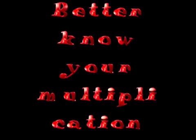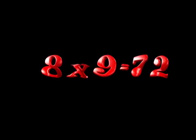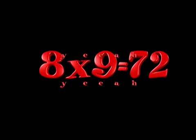Better know your multiplication. 8 x 8 is 64. 8 x 8 is 64. 8 x 8 is 64. Better know, you better know. 8 x 9 is 72. 8 x 9 is 72. 8 x 9 is 72.